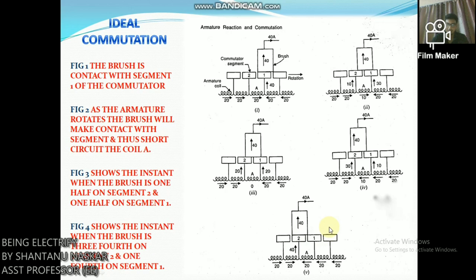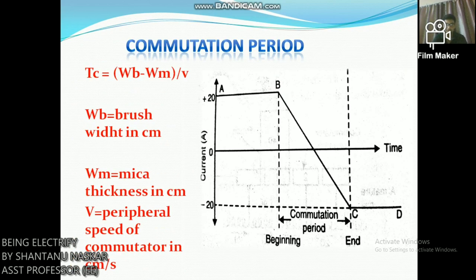Figure 5 shows the instant when the brush is in contact only with segment 2. The brush again conducts 40 amperes: 20 amperes from coil A and 20 amperes from the adjacent coil. The current in coil A is now 20 amperes but in the reverse direction. Thus coil A has undergone commutation. Each coil undergoes commutation in this way as it passes the brush axis. Note that during commutation, the coil under consideration remains short-circuited by the brush.